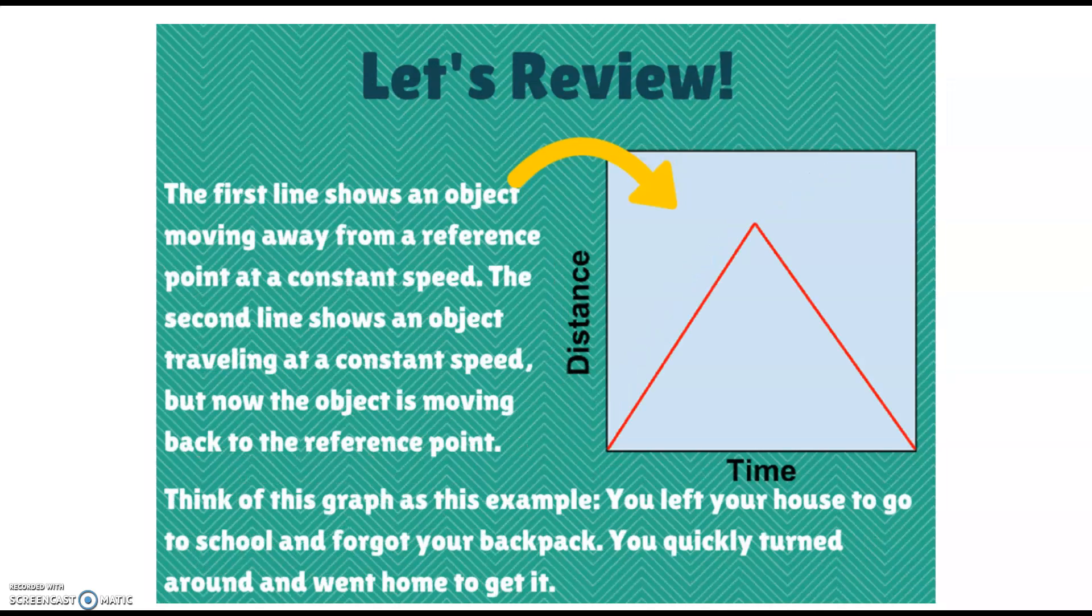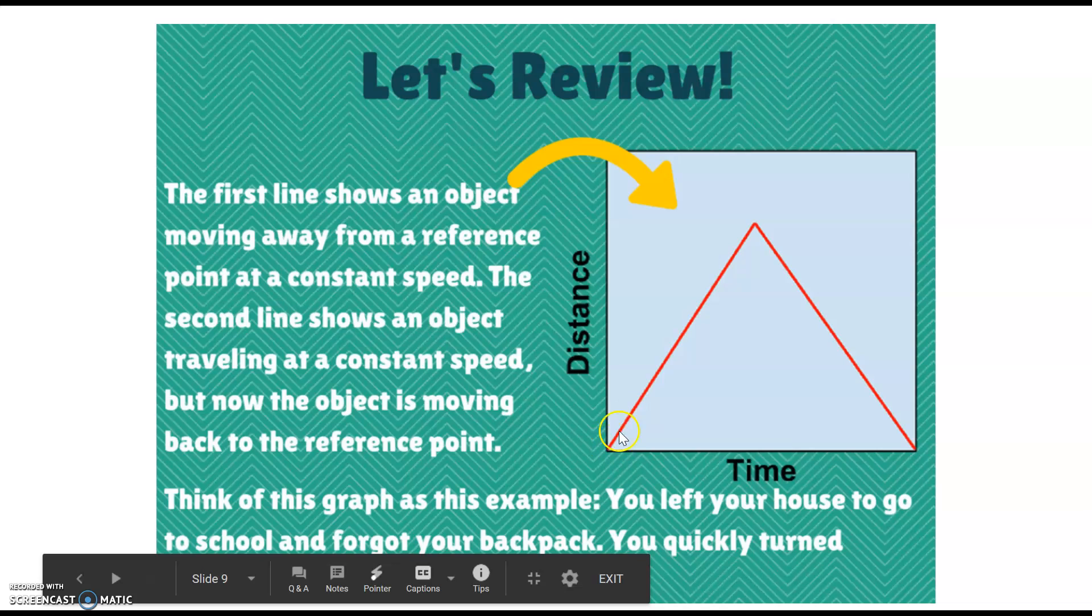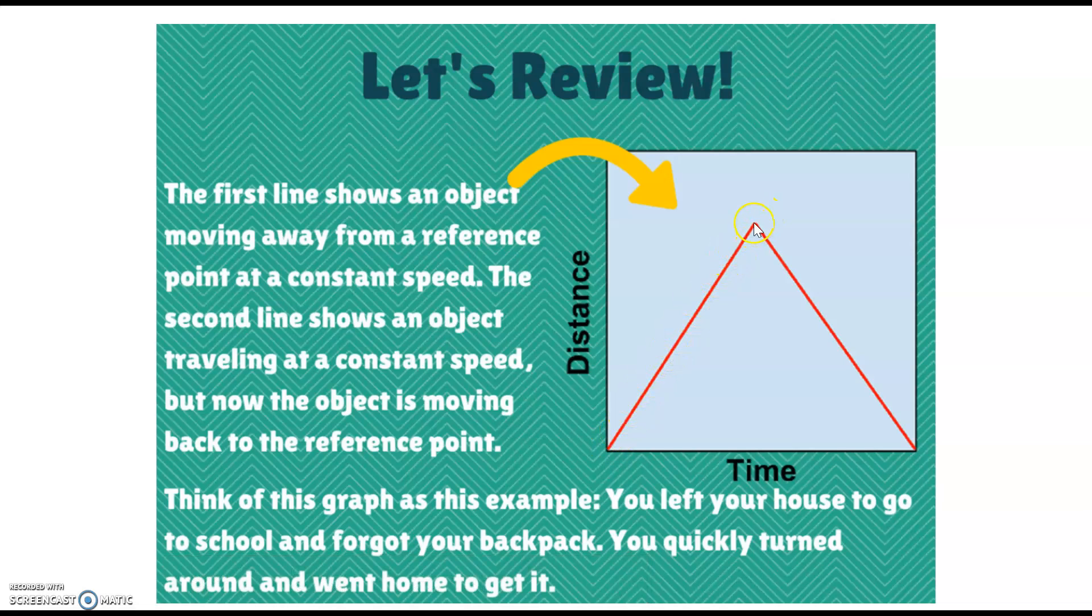This is where we can see an object moving in two different directions. This first line shows an object moving away from a reference point at a constant speed. This second line also shows the object traveling at a constant speed but now it is moving back toward the reference point. This is an example we can use. Here we can say we just left our house to go to school and notice we forgot our backpack. So we quickly turn around and go home to get it.